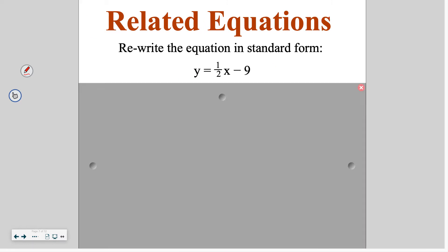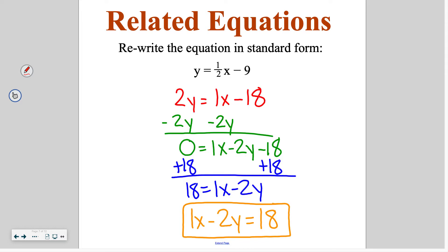Go ahead and try this one on your own. Start by multiplying everything by 2, and then since our x is positive, subtract 2y from both sides, leaving nothing on the left. Then add 18, giving a final answer of 18 equals x minus 2y, or x minus 2y equals 18. If you didn't write the ones in, that is also acceptable.